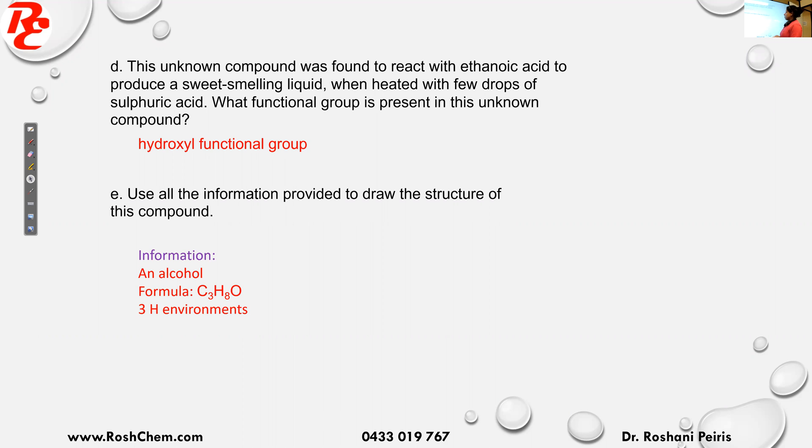So then next question is, use all the information provided to draw the structure of this compound. So now we were given the ¹H NMR. We know the molecular formula of the compound. Now we'll put all this information together to get the structure of this compound. So what information I know is an alcohol. I know the formula is C₃H₈O. And I also know it got three hydrogen environments. And also additionally, I know about the splitting pattern.